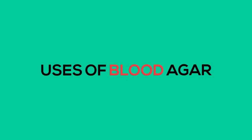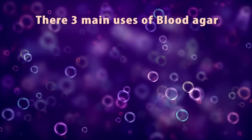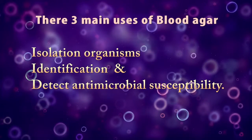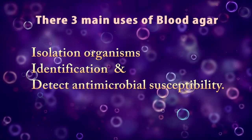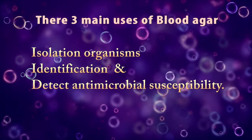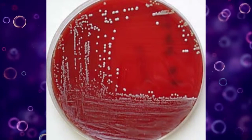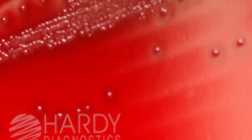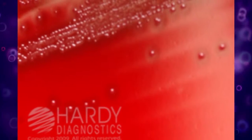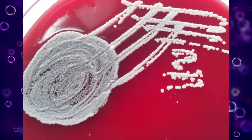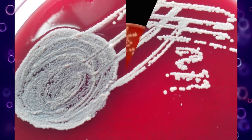There are 3 main uses of Blood Agar: Isolation of Organisms, Identification, and Detection of Antimicrobial Susceptibility. After spreading a specimen on Blood Agar Media, isolated pathogen organism colonies can be examined. Blood Agar is really important to isolate medically significant organisms.